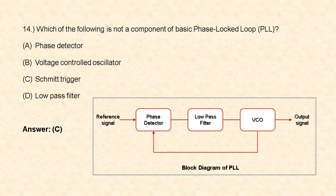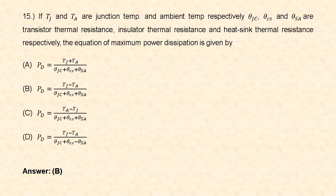Next question: which of the following is not a component of a basic phase lock loop? Option A: phase detector, option B: voltage controlled oscillator, option C: Schmitt trigger, option D: low pass filter. The phase lock loop block diagram has a reference signal, phase difference detector, low pass filter, and voltage controlled oscillator. So option C, Schmitt trigger, is the correct answer.